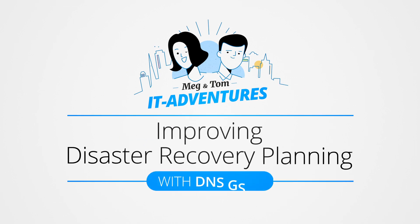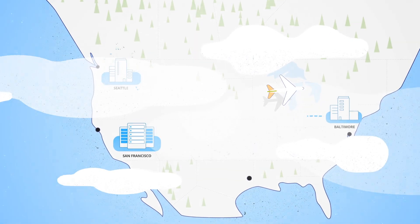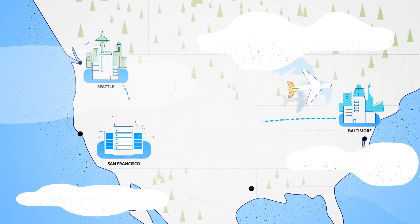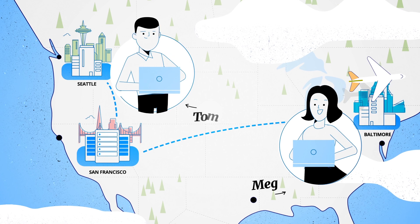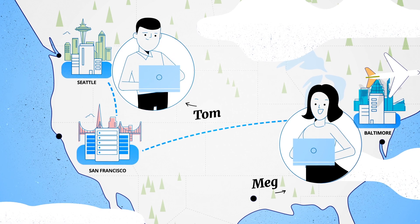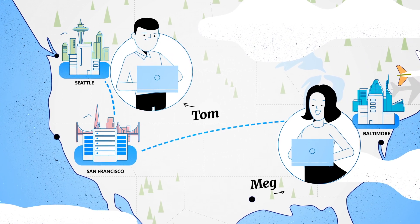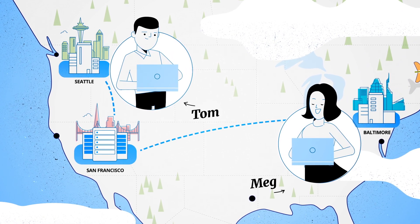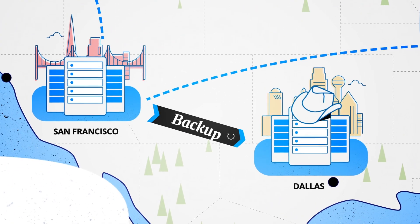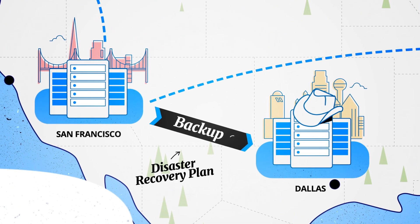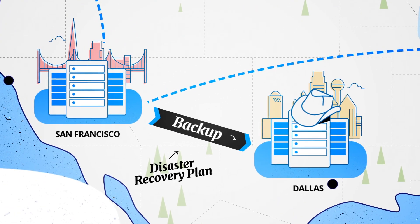Improving Disaster Recovery Planning with DNS GSLB. At Innovation Corp., to access business applications, Meg and Tom's web traffic goes to the same data center in San Francisco. For DRP, they have a backup data center in Dallas.